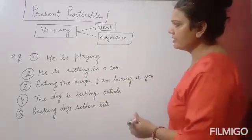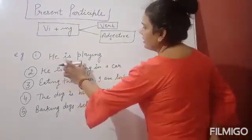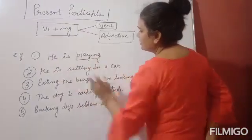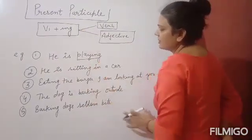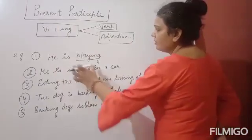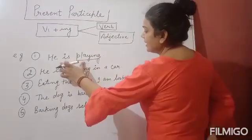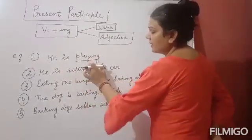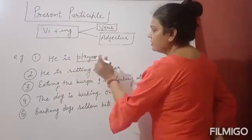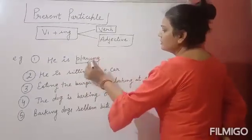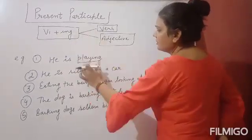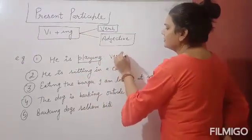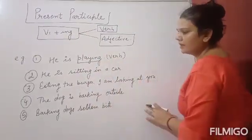In the first sentence: 'He is playing.' You can see the verb 'playing' is used as a present participle, and it is showing action here. So in this sentence, the present participle is used as a verb.